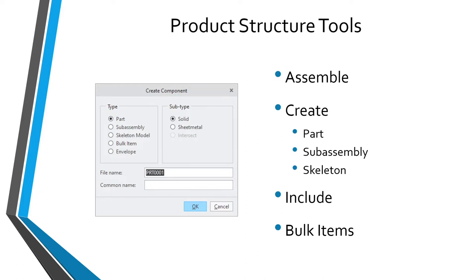The include command is often used just to define the product structure and keep your bill of materials correct. Later on, as you develop the product, you can edit the definition of that component to add constraints, and it will no longer be included — it'll be an actual component and you will see its geometry in the graphics area.